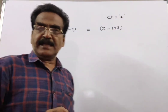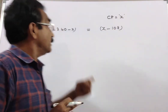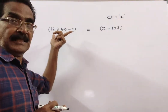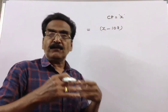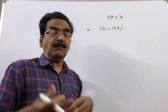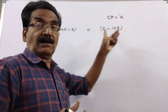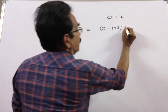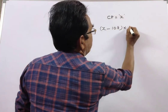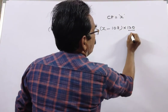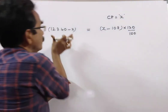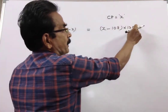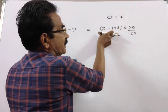According to the problem, the profit on selling at 123.45 is 20% more than the loss on selling it at 108. So, 20% more means it is 120%. So this profit is 120% of this loss.